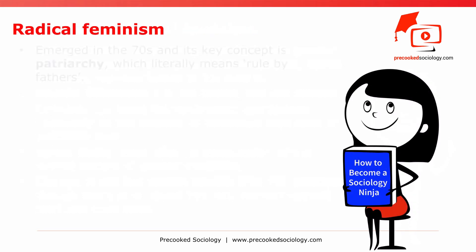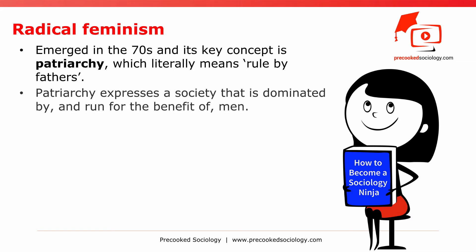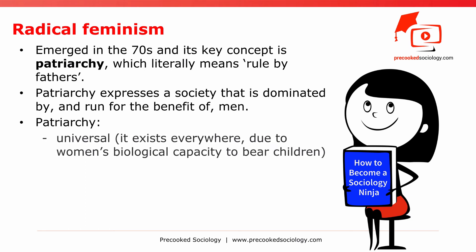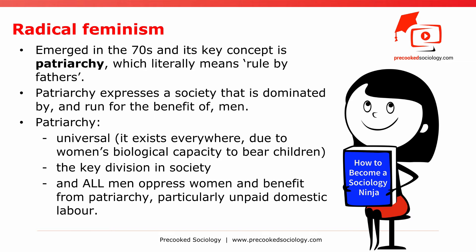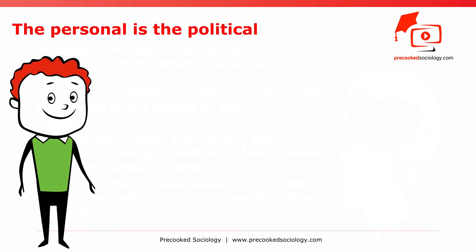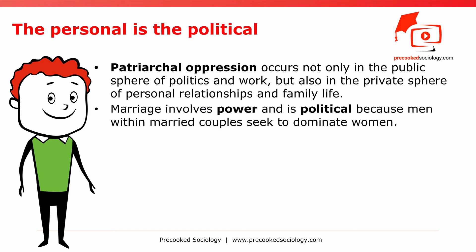Radical Feminism emerged in the 70s, and its key concept is patriarchy, which literally means rule by fathers. Patriarchy expresses a society that is dominated by, and run for the benefit of, men. For radical feminists, patriarchy is three things: it is universal, existing everywhere due to women's biological capacity to bear children; it is the key division in society; and all men oppress women and benefit from patriarchy, particularly through unpaid domestic labor. Patriarchal oppression occurs not only in the public sphere of politics and work, but also in the private sphere of personal relationships and family life. For example, marriage involves power and is political because, for a radical feminist, men within married couples seek to dominate women.